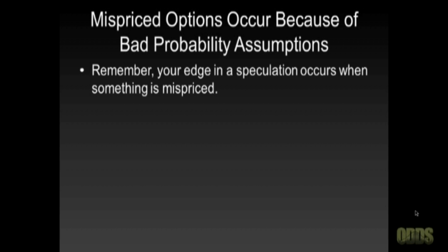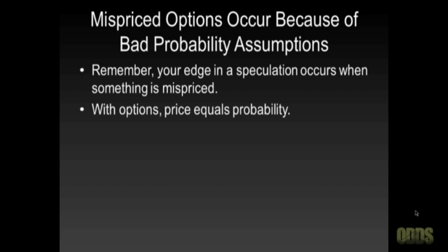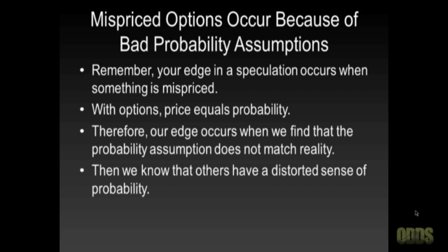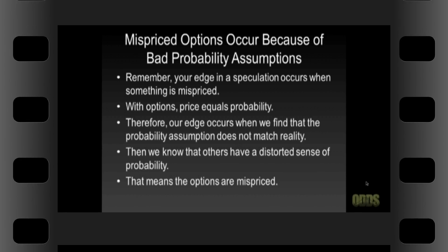There are a few things to remember. First, always remember: your edge in a speculation occurs when something is mispriced. With options, price equals probability. Therefore, our edge occurs when we find that the probability assumption does not match reality. Then we know that other traders have a distorted sense of probability, which means the options are mispriced.